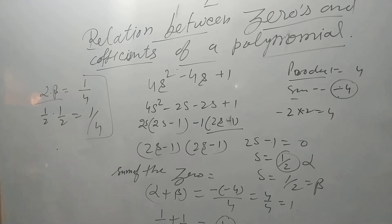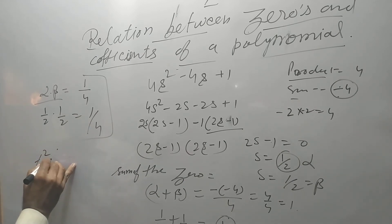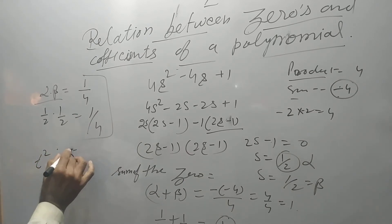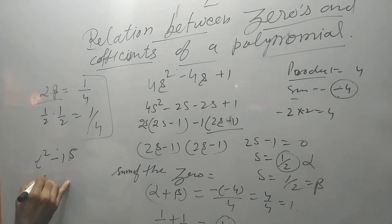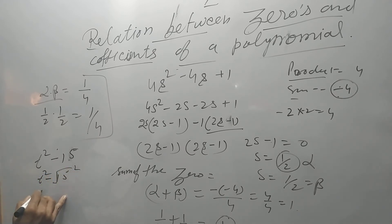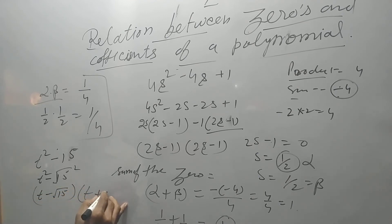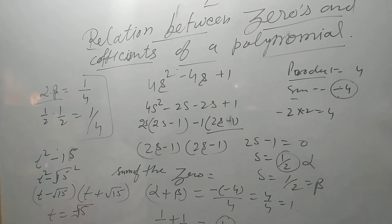Next question: t² - 15. In this condition, we can factor as (t - √15)(t + √15), which means t is equal to √15 and t is equal to -√15. These are the zeros of this polynomial, and we can verify the product and sum using the coefficient relations.